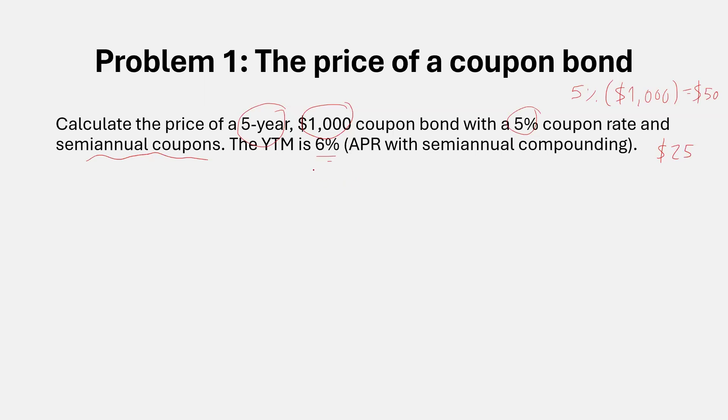The yield to maturity of this bond is computed as six percent. It says that this is APR, annual percentage rate with semi-annual compounding. This is a common way to quote yields. So this means that over the entire year, the bond yields six percent, or three percent every six months. Let's see how we are going to find the price of this bond.